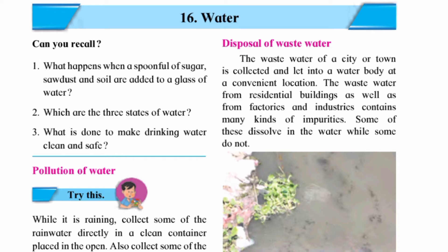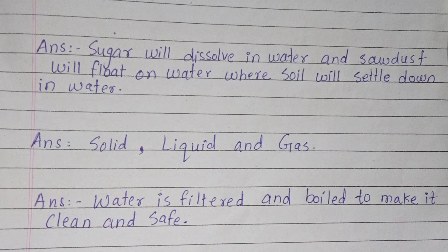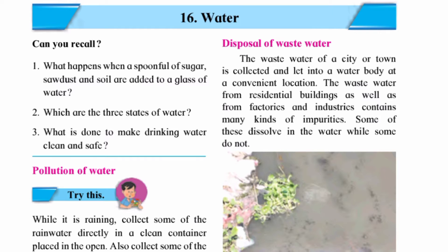First question: What happens when a spoonful of sugar, sawdust, and soil are added to a glass of water? Answer: Sugar will dissolve in water, sawdust will float on water, and soil will settle down in the water.